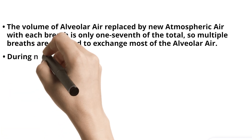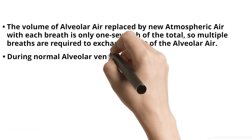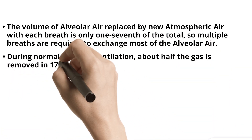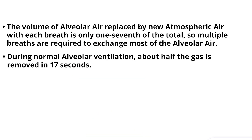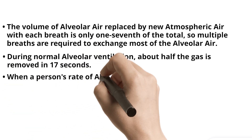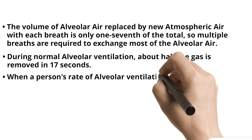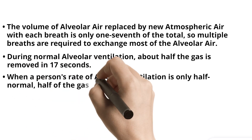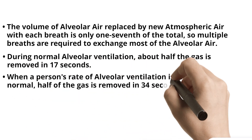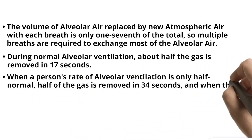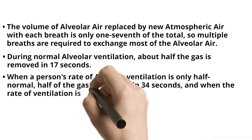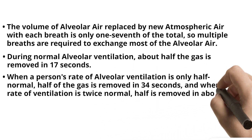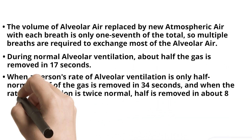During normal alveolar ventilation, about half the gas is removed in 17 seconds. When a person's rate of alveolar ventilation is only half normal, half of the gas is removed in 34 seconds. When the rate of ventilation is twice normal, half is removed in about eight seconds.